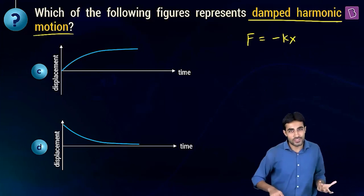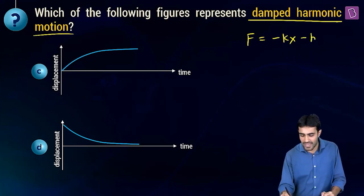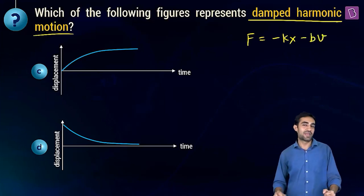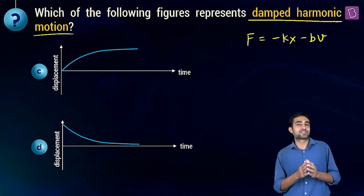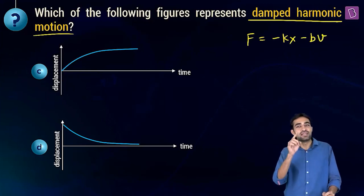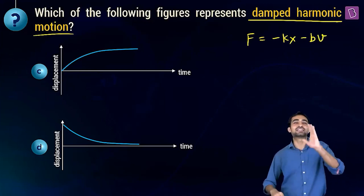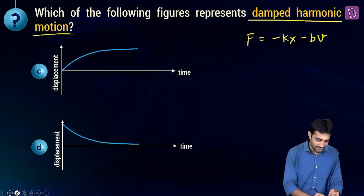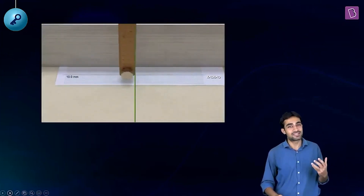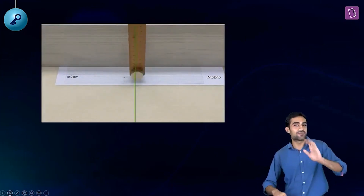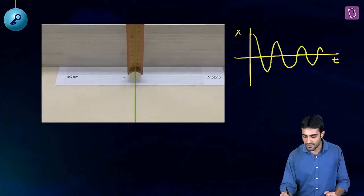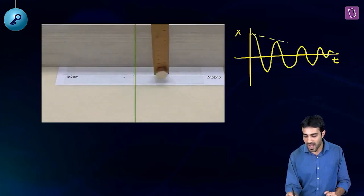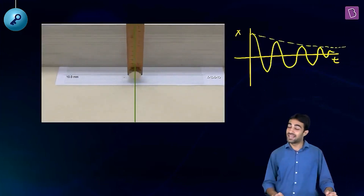In simple harmonic motion, the restoring force is F = −kx. In damped harmonic motion, an additional damping force acts — written as −bv, a function of velocity. Due to this damping force, there is energy loss and the amplitude decreases with time. If we draw displacement versus time, the curve shows oscillation with decreasing amplitude.